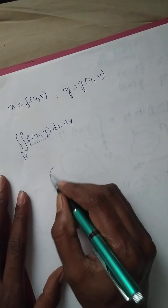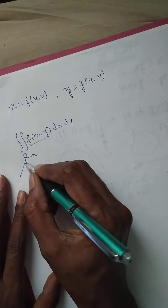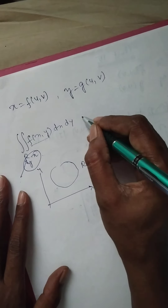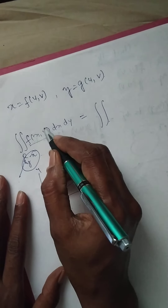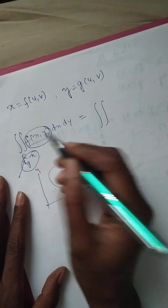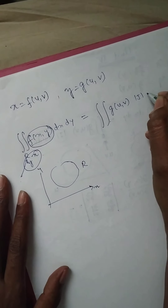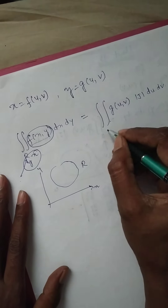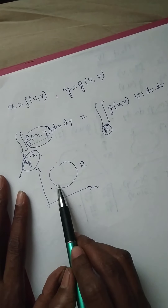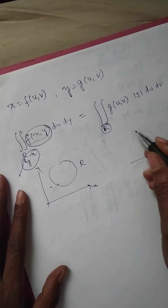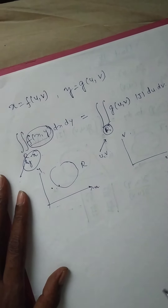The region is in the xy plane and the limits are of x and y. Now we want to change it to new variables. A function of x and y is converted to a function of u and v, multiplied by the Jacobian, du dv, now in a new region. This was a region in the xy plane; the new region will be in the u, v plane, where the limits will be of variables u and v.